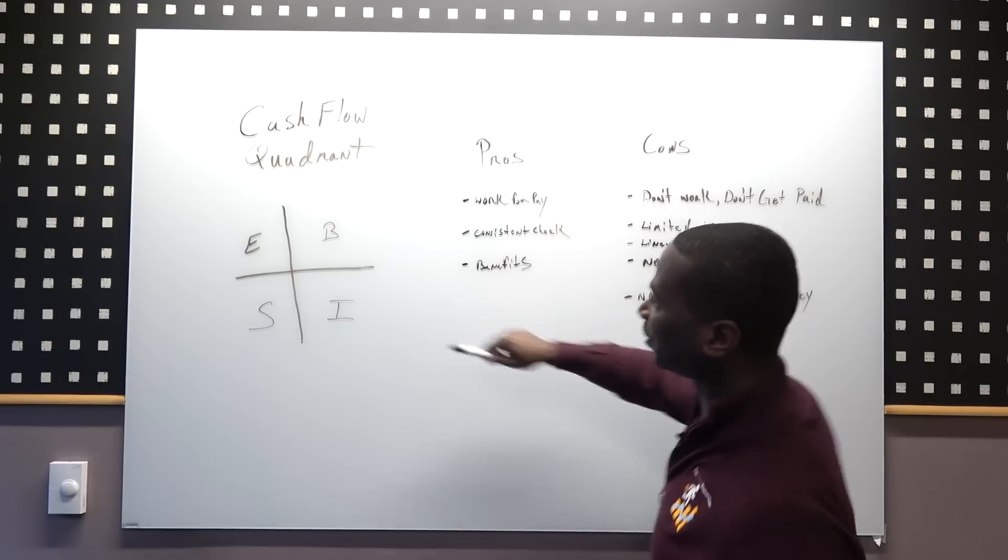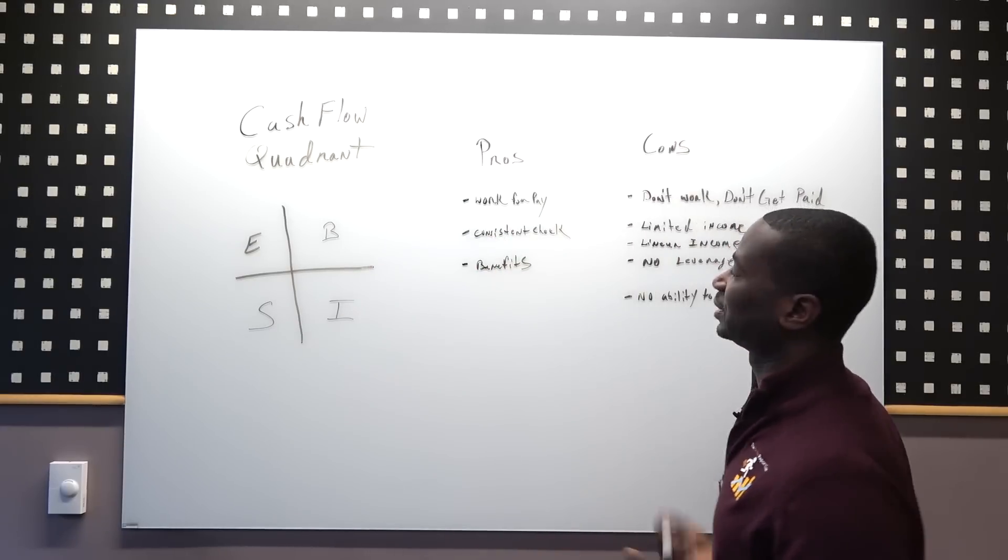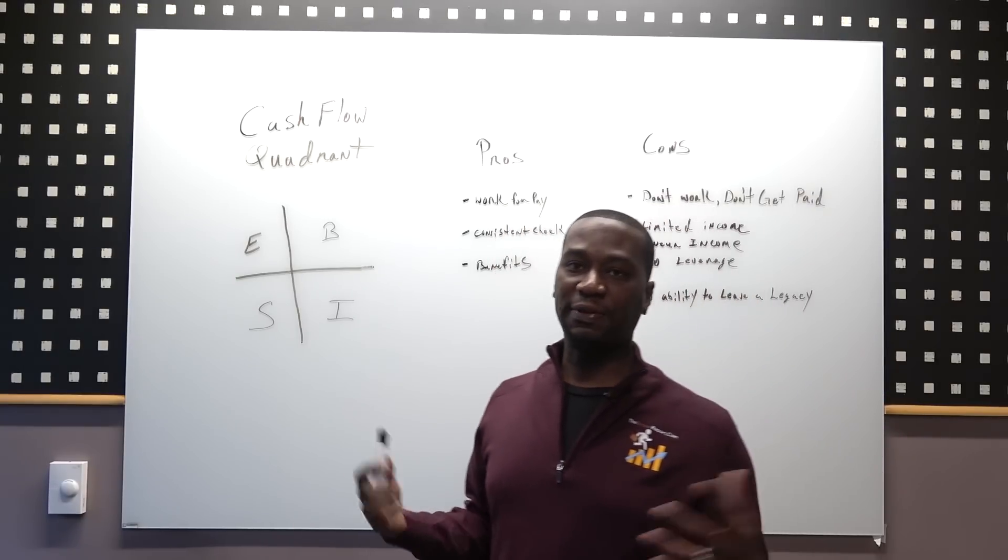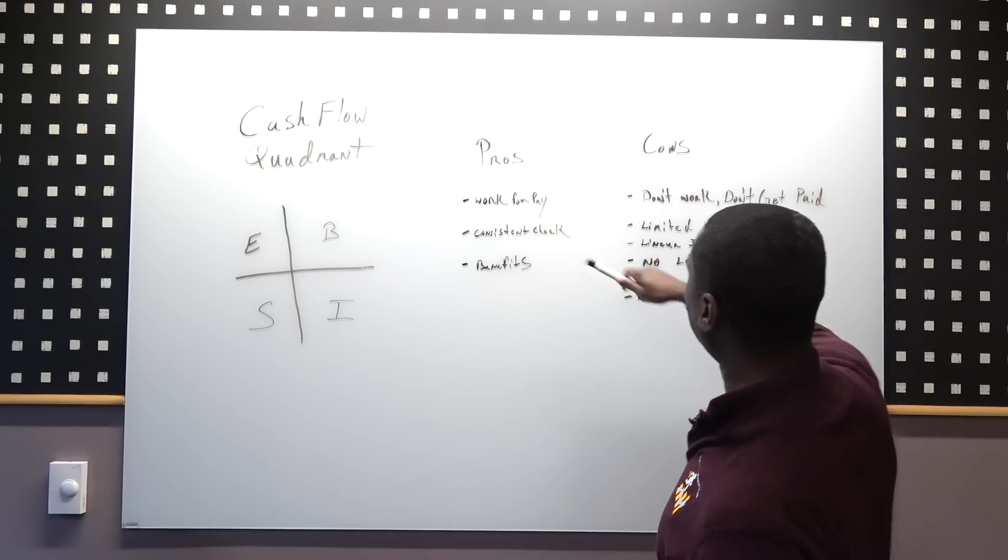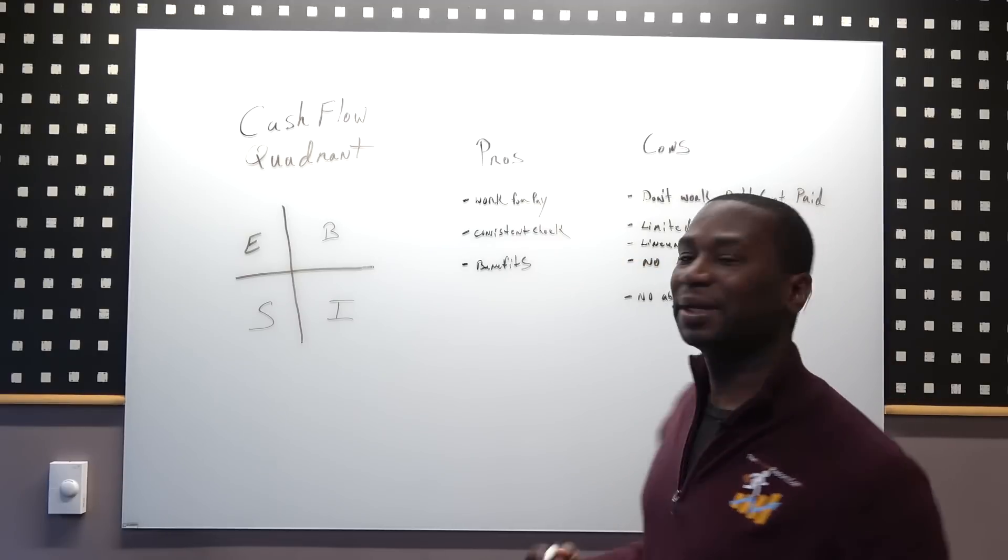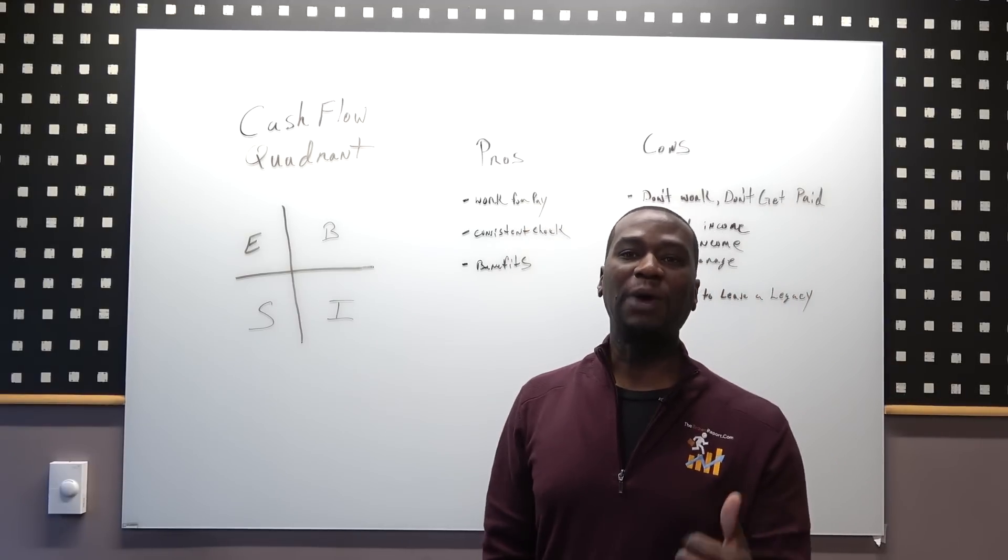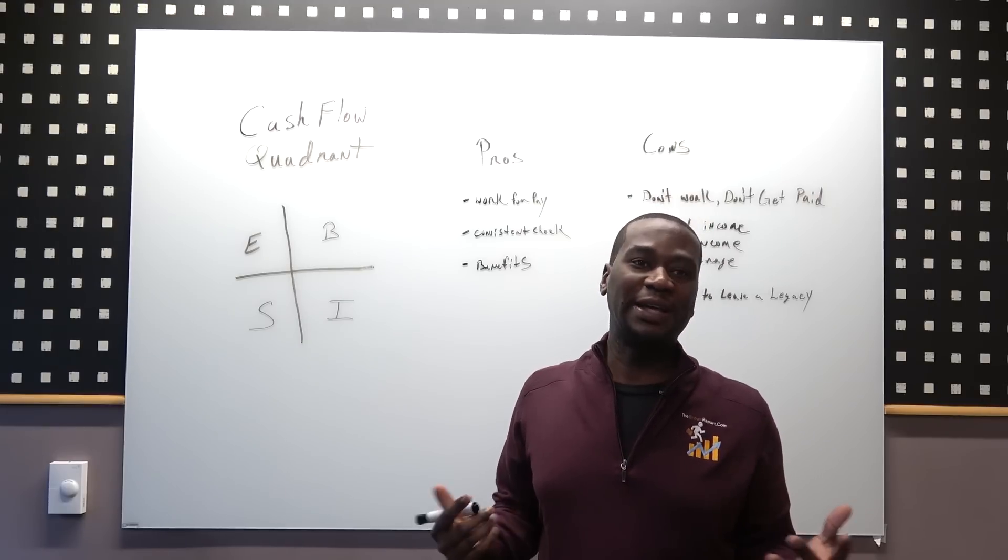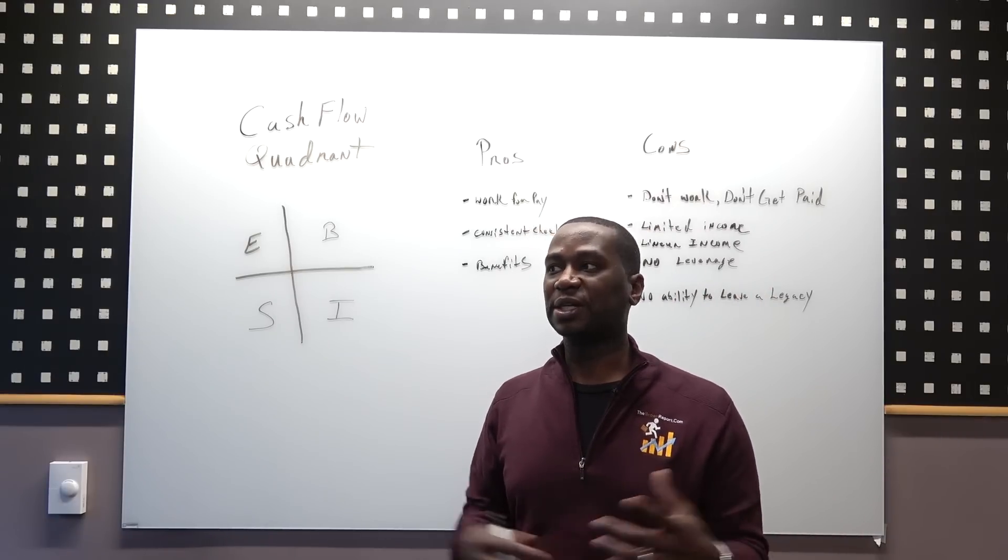In the employee quadrant, you get a consistent check - I know every two weeks I'm gonna get a check. But the problem with that is it's limited income. You don't have the ability to say 'I want to make ten thousand dollars this week.' You don't even have that ability.